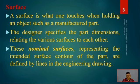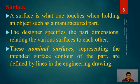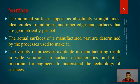Now we come to the other component — surface measurement. Surface is a big topic and very important technically for the performance of different components. Surface is what one touches when holding a manufactured part. Designers specify part dimensions and the surfaces relating to each other. Critical surfaces must be appropriately represented in engineering drawings, specifying surface roughness, waviness, and other attributes. Manufacturers produce surfaces based on those design specifications. Nominal surfaces represent the intended surface contour, defined by lines in engineering drawings as geometrically perfect.